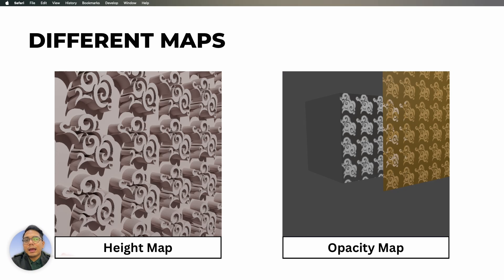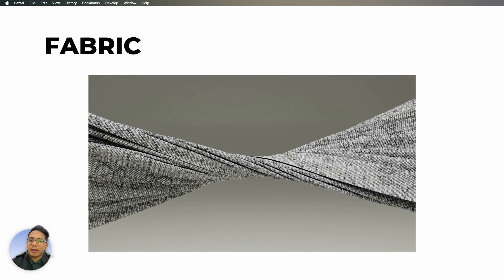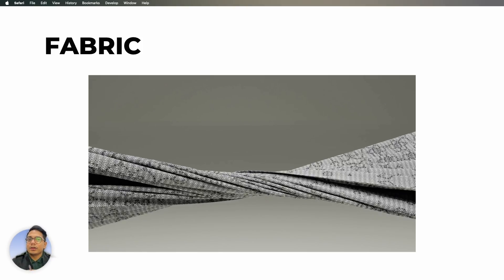The third is the height map. If you have a rubber print or embroidery that comes out from the fabric, you use a height map — sometimes called a displacement map. There is also an opacity map: if you have a sheer fabric and want to create transparency, you use an opacity map. You also have roughness map and metallic map to communicate those surface properties. These maps are often combined — sometimes two, three, or four maps together — to create a complete, realistic-looking fabric.